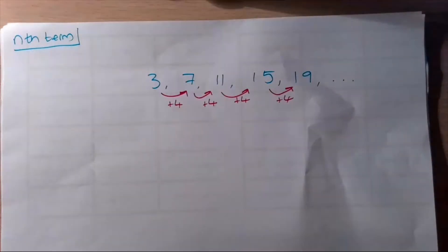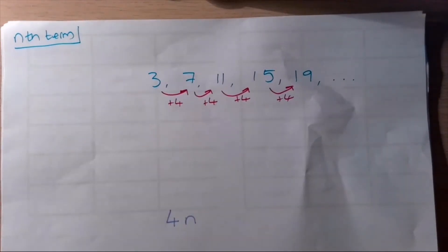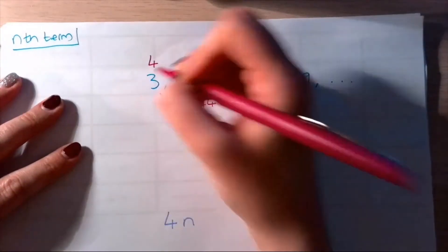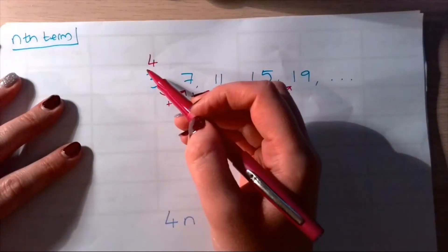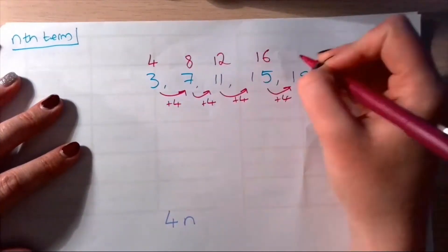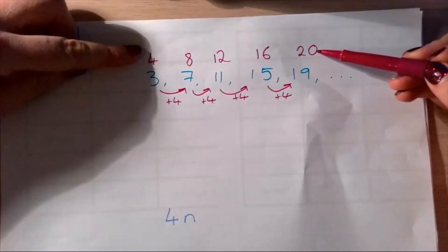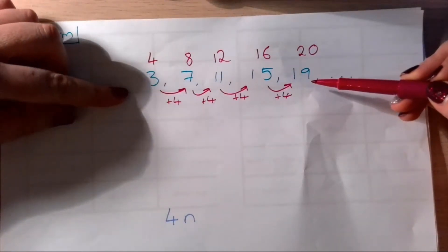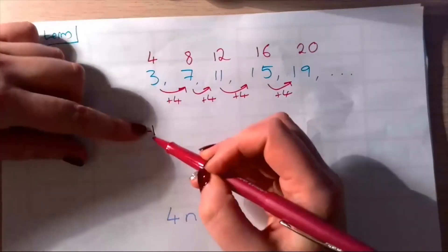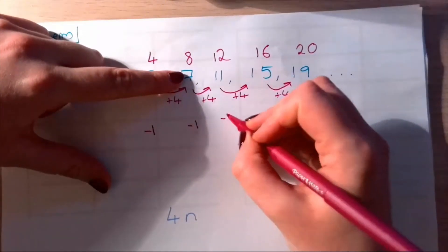We've got something to do with our four times tables, so our nth term is going to begin with 4n. Above here I'm going to write out my four times table starting with four—if n is one, then four times one is four. That's where we start: 4, 8, 12, 16, 20. Now I need to figure out how do I get from my four times tables to my sequence. In this case I'm doing four subtract one is three. I'm writing it below for now.